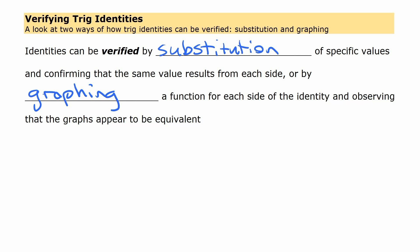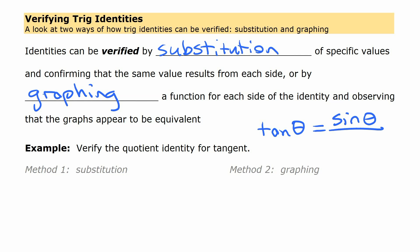Alright, so we're going to look at an identity and verify it in both those ways as an example. The example we're going to use is the quotient identity for tangent. And that is the one that goes like this: tangent of theta is equal to sine of theta divided by cosine of theta.